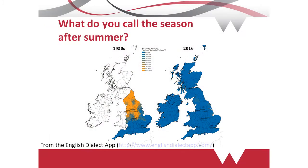Similarly, you see the same sort of survey item for the question: what do you call the season after summer? On the left, the Survey of English Dialects responses show 'back end' as the majority term in the north and 'autumn' as the majority term in the south, with a transitional area. Then on the right, the English Dialect App shows that 'autumn' has become the normal term throughout the UK.